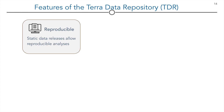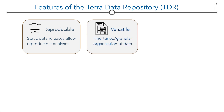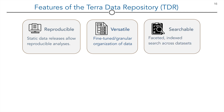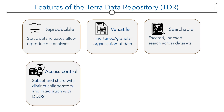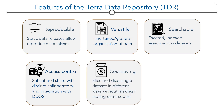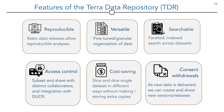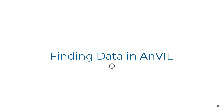TDR enables reproducible analysis with immutable or static data releases. TDR is versatile with a fine-tuned organisation of the data. Data is more searchable — the data repository allows faceted index search across datasets. Access controls are more granular and include built-in subsetting and sharing with distinct collaborators, with the data explorer and streamlined access via integration with DUOs. Storing datasets in TDR saves money. Data snapshots avoid creating and paying to store extra copies of large primary data files. The data repository has better mechanisms for tracking and versioning, including consent withdrawals.